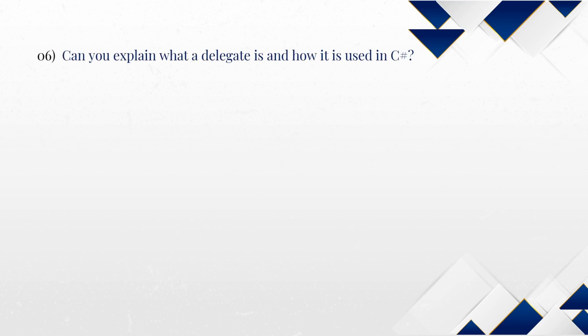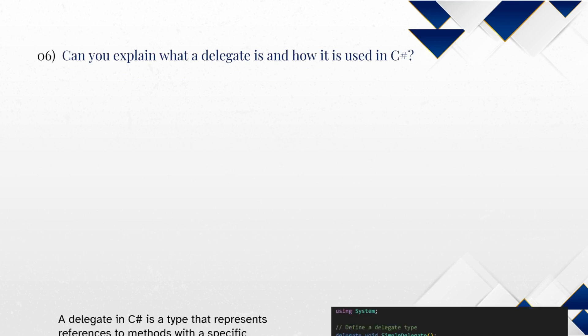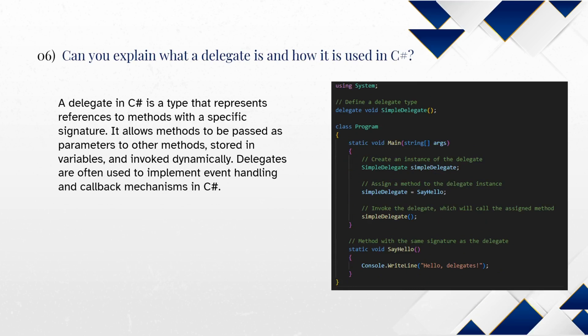Can you explain what a delegate is and how it is used in C-Sharp? A delegate in C-Sharp is a type that represents references to methods with a specific signature. It allows methods to be passed as parameters to other methods, stored in variables, and invoked dynamically. Delegates are often used to implement event handling and callback mechanisms in C-Sharp.